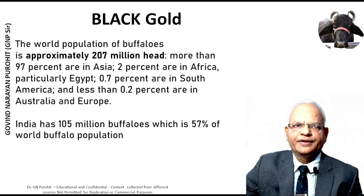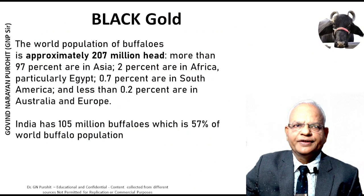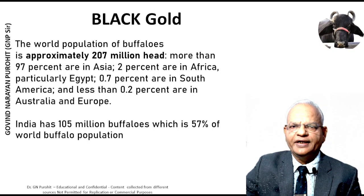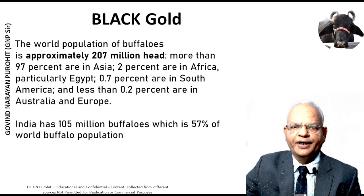Buffalo is considered the black gold in many countries. The world population of buffalo is approximately 207 million: more than 97% are found in Asia, 2% in Africa — particularly Egypt — 0.7% in South America, and less than 0.2% in Australia and Europe. India has 105 million buffaloes, which is 57% of the world's buffalo population.